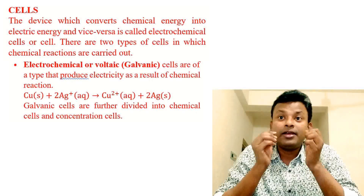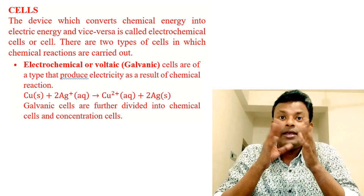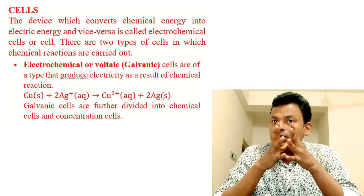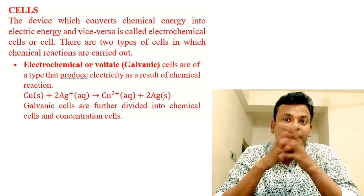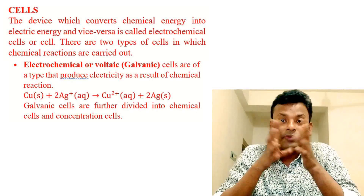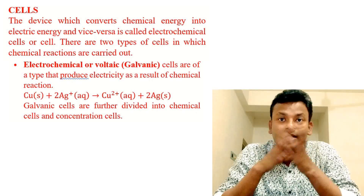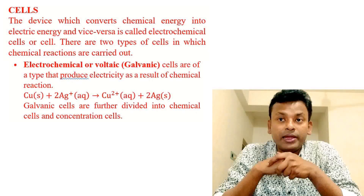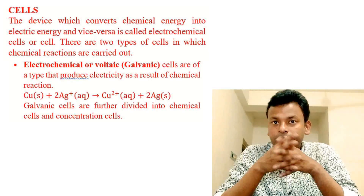For example: Cu(s) + 2Ag⁺(aq) → Cu²⁺(aq) + 2Ag(s). Galvanic cells are further divided into chemical cells and concentration cells.